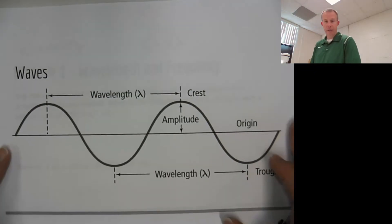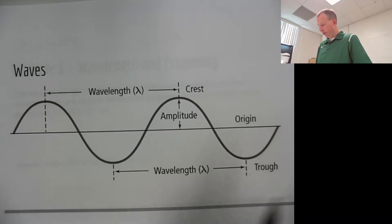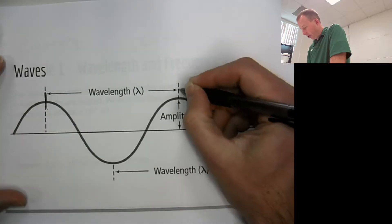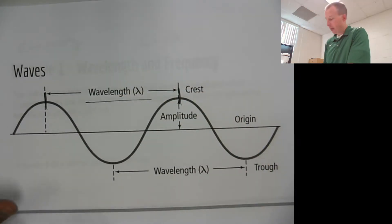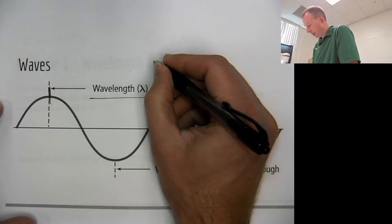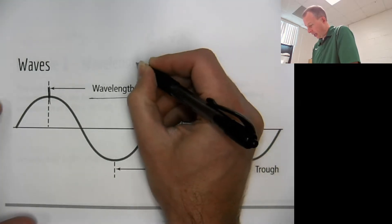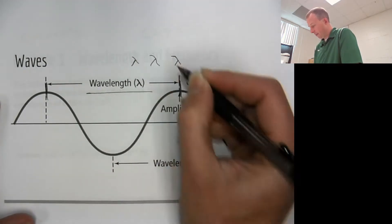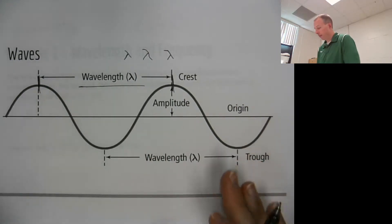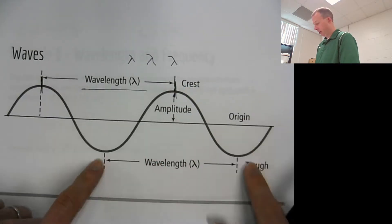Let's look at a wave for a second. If you take a look at a wave, there are a few things to be aware of. The biggest thing we're going to care about is the wavelength, which is right here. Wavelength is represented by this little symbol — it's a Greek symbol for lambda. You'll see it written different ways, but they all mean the same thing: wavelength.